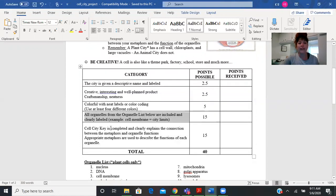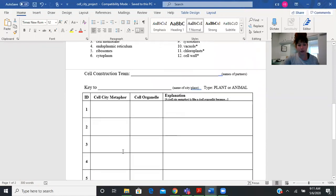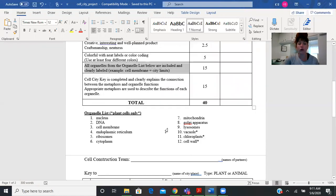All organelles from the list are clearly included and clearly labeled - for example, the cell membrane equals the city limits or the border. And the key is completed, and the key is this paper down here.